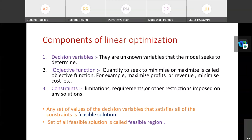Next one is constraints. Constraints are the limitations, requirements or other restrictions imposed on any solution. Any set of values of the decision variables that satisfy all the constraints is called a feasible solution. And set of all feasible solutions is called a feasible region.